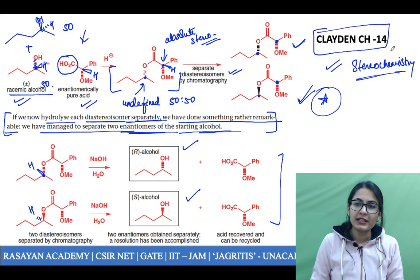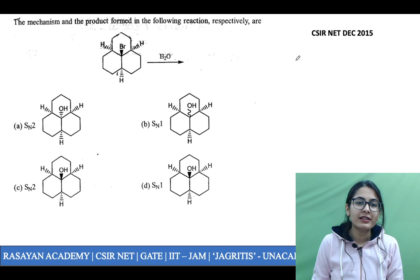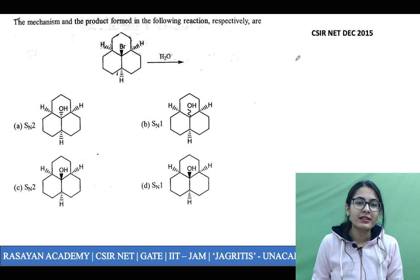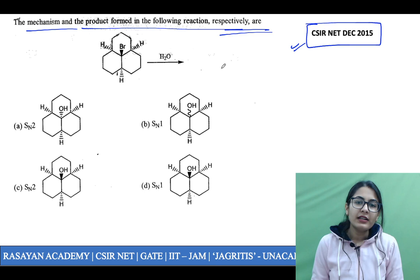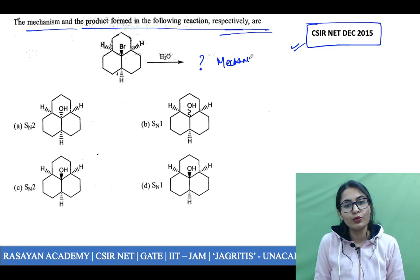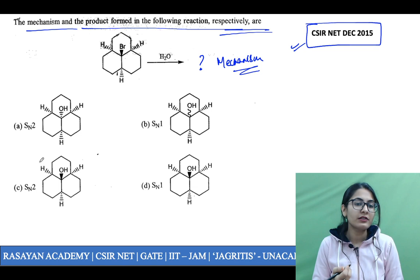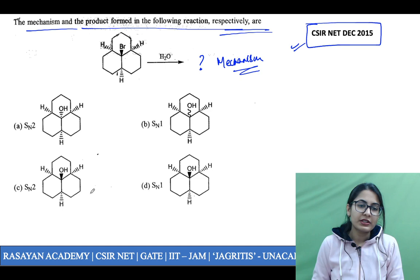Definitely study chapter 14, stereochemistry. Now one more very important question: the mechanism and the product formed in the following reaction respectively are. This is a question from CSIR NET December 2015. What is the product and what is the mechanism? Two things are asked — products are given along with SN1 or SN2. The question is mostly focused on stereochemistry. What do you expect from this molecule? It is your tertiary bromide.